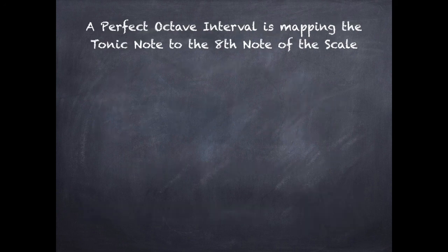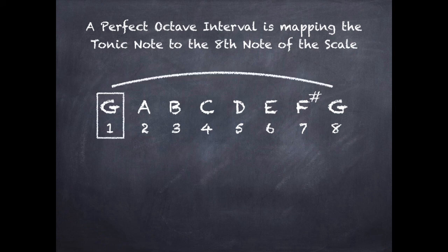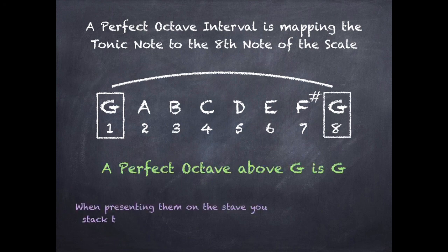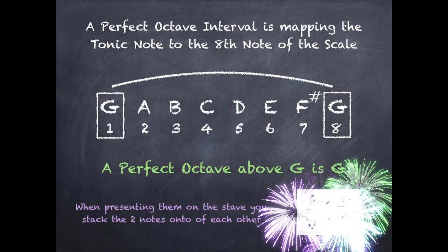A perfect octave interval maps the tonic note to the eighth note of the scale. I go from the first note, G, to the eighth note, which is also G. So a perfect octave above G is G, and when I present them on the stave I stack them on top of each other.